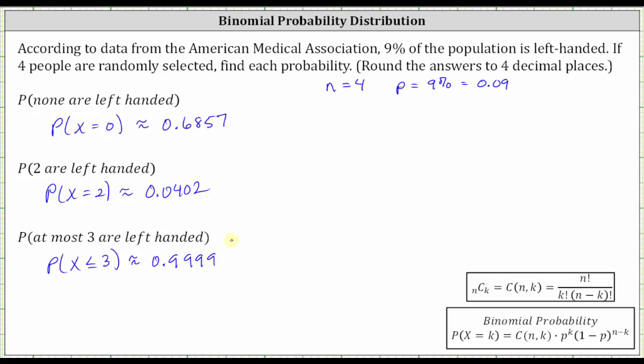So Desmos is a nice way to determine binomial probabilities because we also get to see a graph of the distribution. I hope you found this helpful.